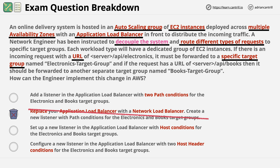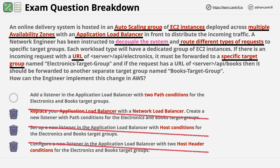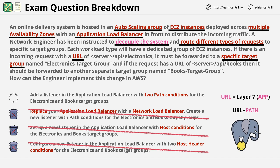Now we have three answers stating different condition types: path, host conditions, and host header conditions. The question's most important keyword is URL. The question wants us to direct a certain URL — server/API/electronics — to one target group, and another URL — server/API/books — to a different target group, and this is achieved using a path condition. Because of this, we can eliminate answer C, since a host condition won't allow us to redirect based on the full URL. Likewise, we can eliminate answer D, because again we need to direct based on the contents of a URL. This leaves us with answer A — the correct answer — because the question talks about URLs, which are layer 7, and because the question mentions URL plus path, we need path conditions to direct incoming traffic towards a specific target group.